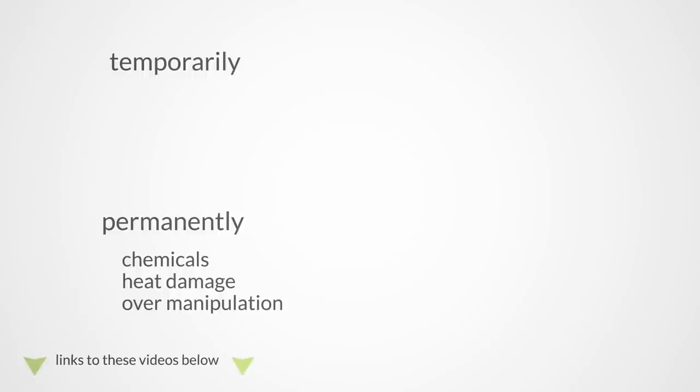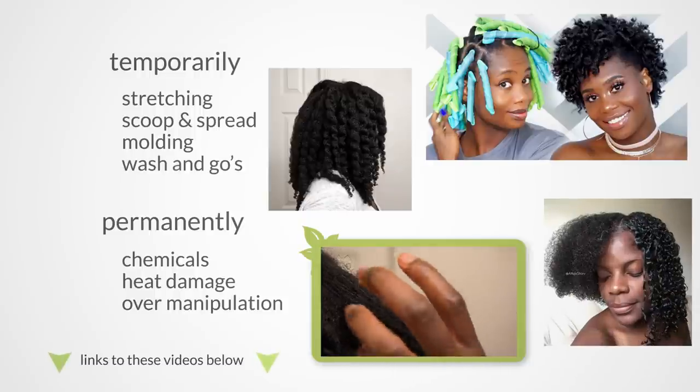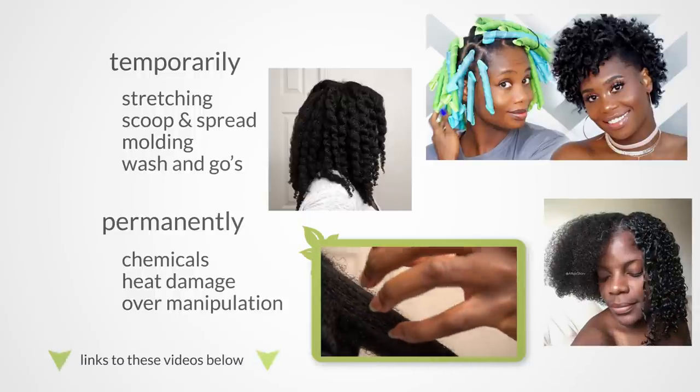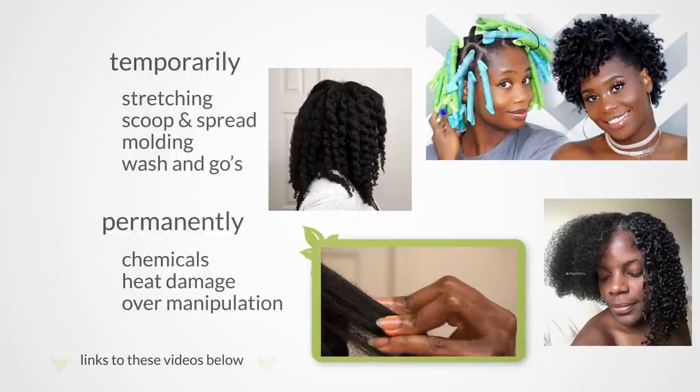A temporary change in curl pattern can be achieved with stretching, scooping and spreading, molding, and wash and gos. If done correctly, all these options keep the structure of your hair intact and help you avoid tangles and breakage.